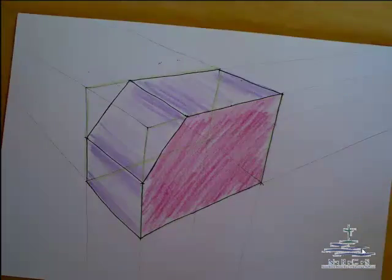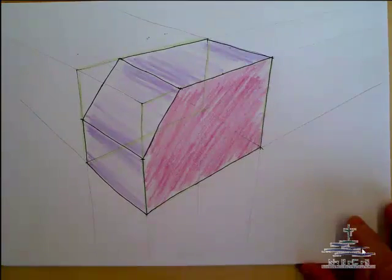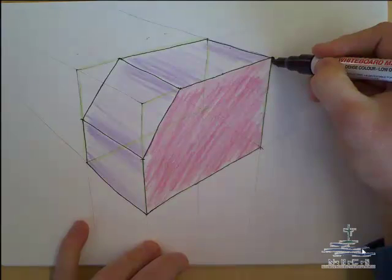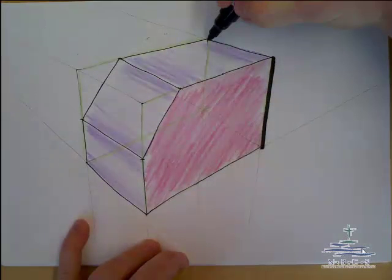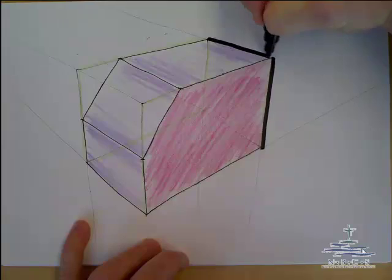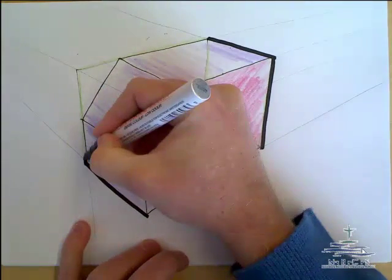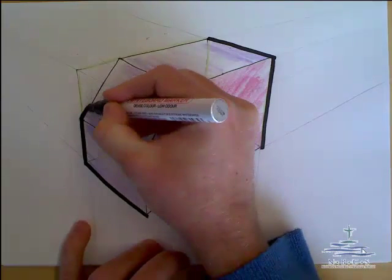Now, what we're going to do, just to finish this guy off, grab our whiteboard marker, go carefully around the outside edge. Remembering that we just whiteboard if we were asked to cut it out, so we don't do all our lines.